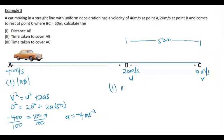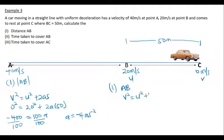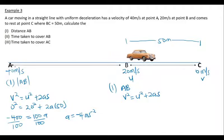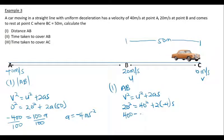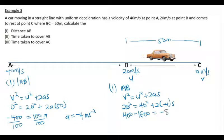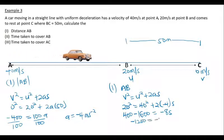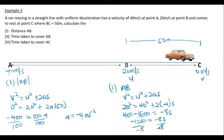Now that we have the deceleration of −4 m/s², we calculate distance AB. Using V² = U² + 2aS for segment A to B, where the initial velocity is 40 m/s and final velocity is 20 m/s: 20² = 40² + 2(−4)S, so 400 = 1600 − 8S. Rearranging: −1200 = −8S, and dividing both sides by −8 gives S = 150 meters. The distance from A to B is 150 meters.